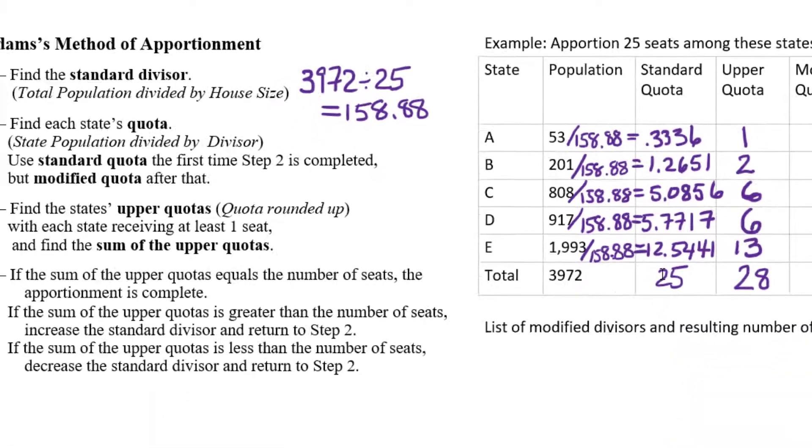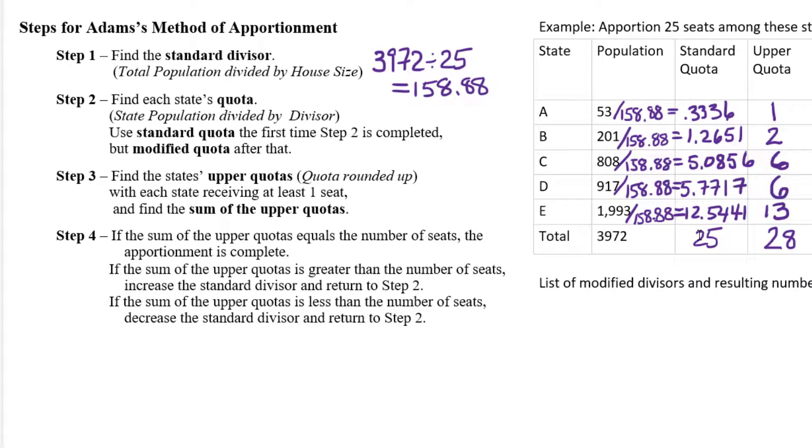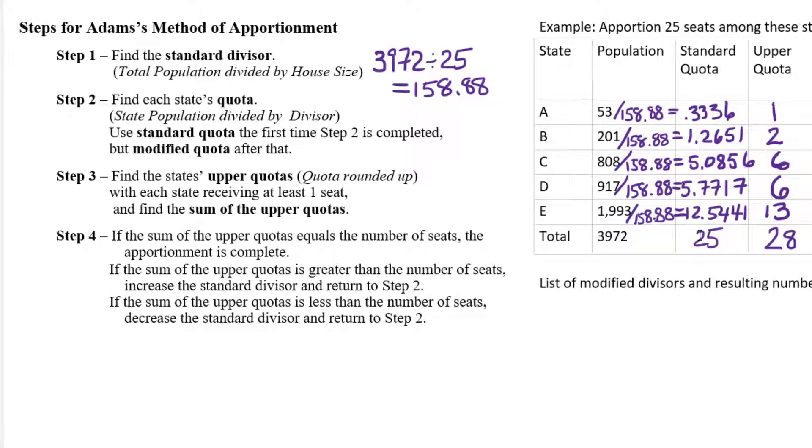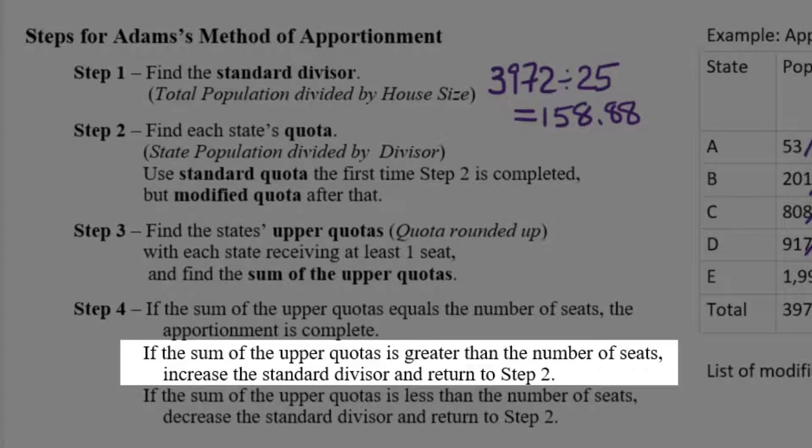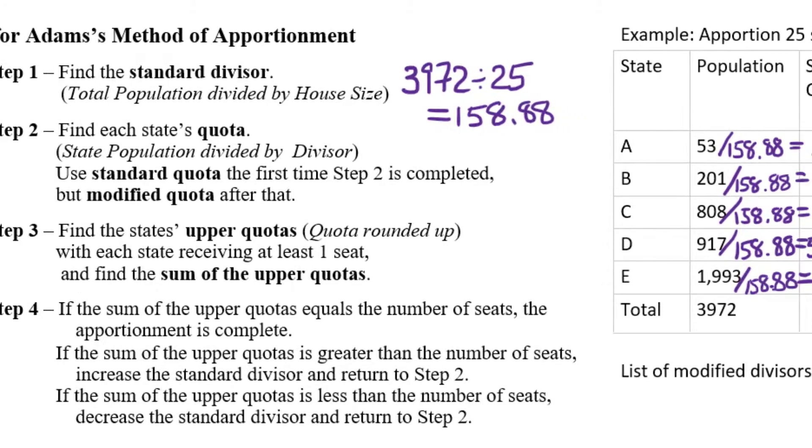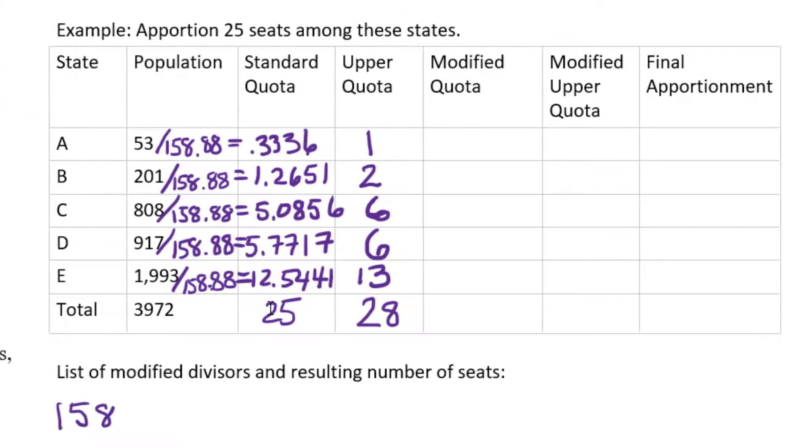So we're going to adjust the divisor. The divisor was 158.88, the number we divided by. We're going to adjust it up, make it bigger. So when we divide by it, we get a smaller upper quota. And I'm going to have to possibly do this a few times. There's no formula for finding a modified divisor that works. So we have to do guess and check. So I'm going to always keep a list of what I've tried. So I tried 158.88, the standard divisor, and that gave me 28 seats, which was too big. So that means that I need to increase my divisor in order that when I divide by it, I get a smaller value. So for example,